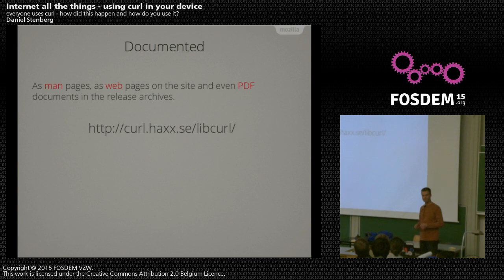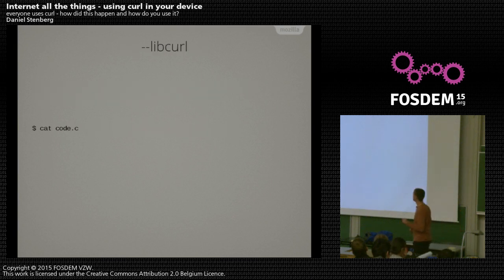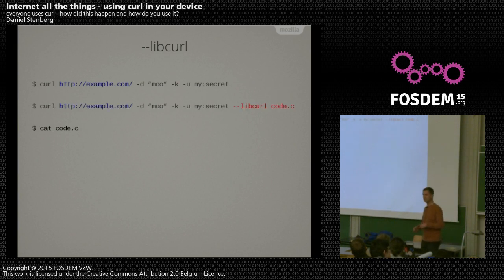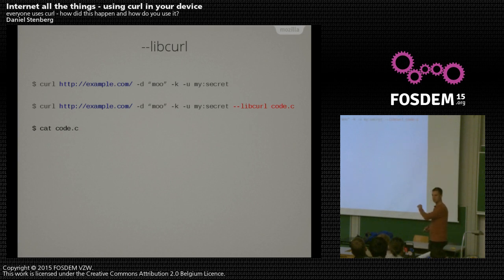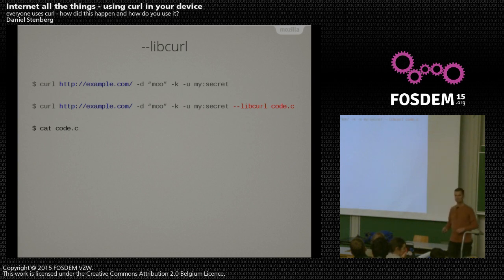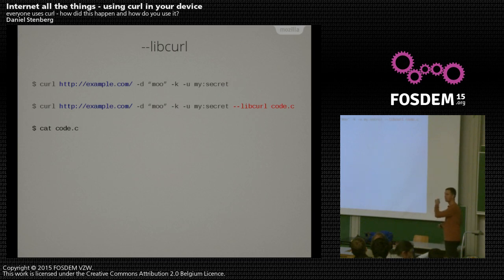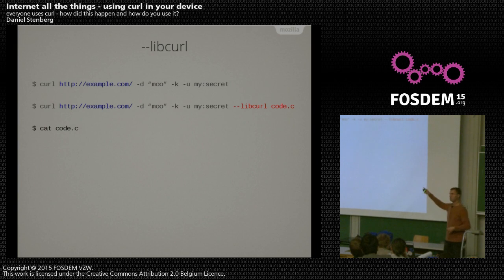We've documented this pretty well — possibly too well at some point, since it's really hard to find the docs sometimes because you're drowning in them. I wanted to mention the fancy --libcurl command for the command line tool. If you ever run a command with curl, you can add --libcurl code.c and it'll generate the libcurl C code for that corresponding command — so you'll have the code written for you. It's an awesome template. If you ever want to repeat a command line operation in a libcurl way, that's the way to do it. Most bindings are very close to the libcurl C API style, so you can usually convert it to PHP or Python or whatever.